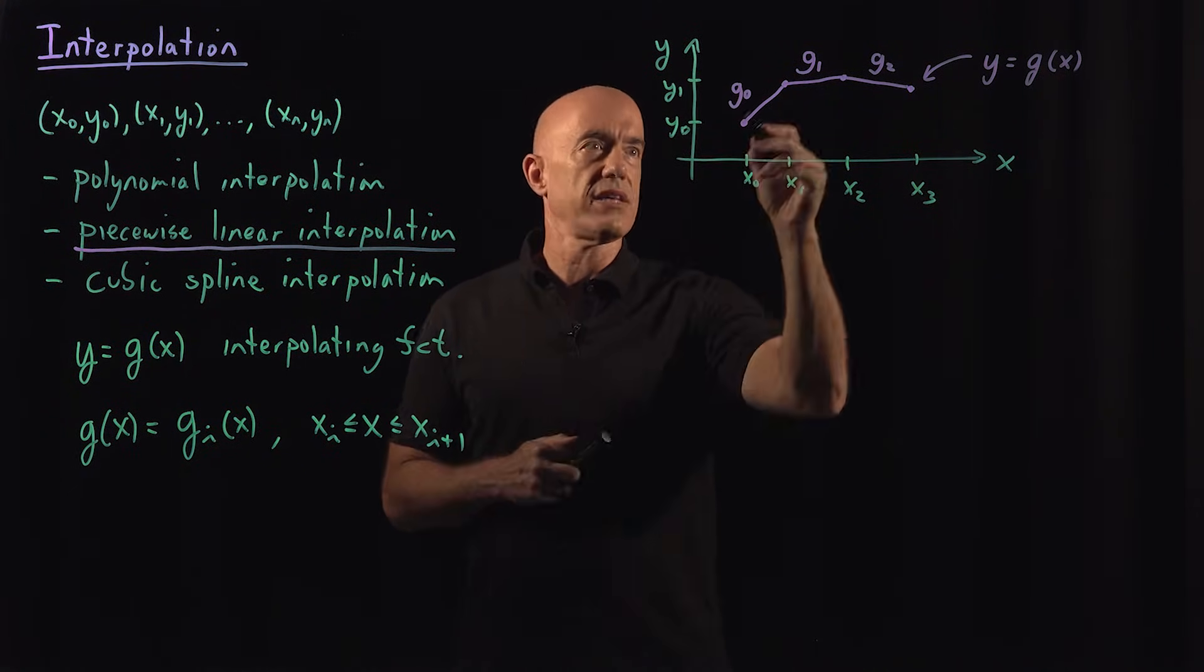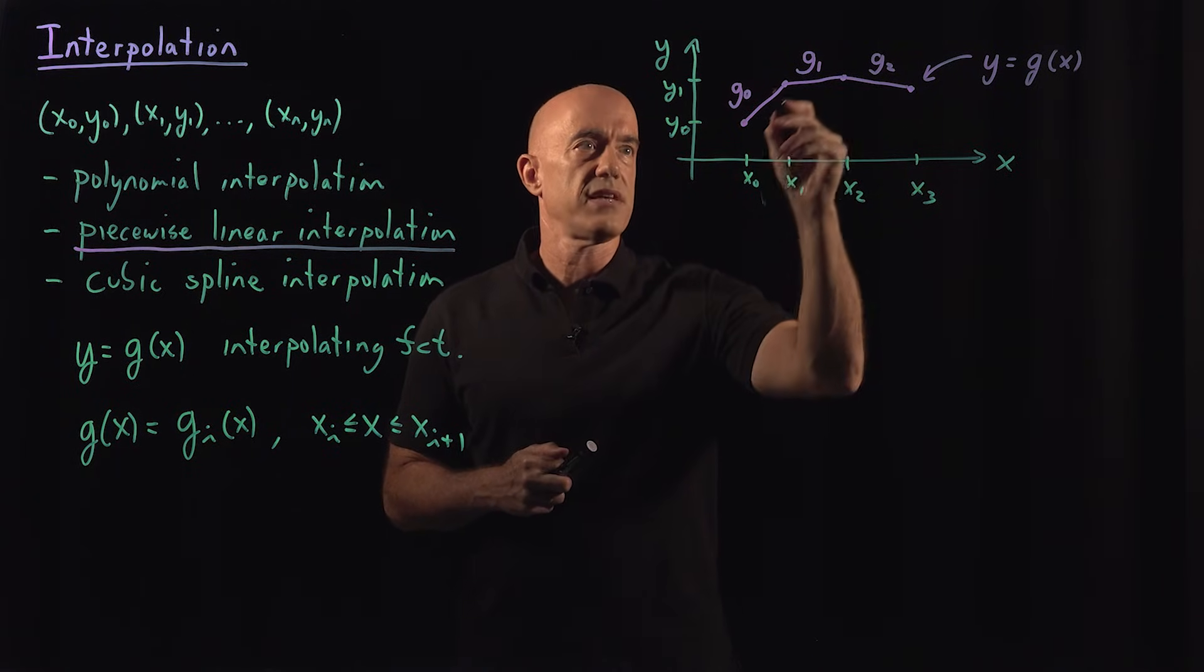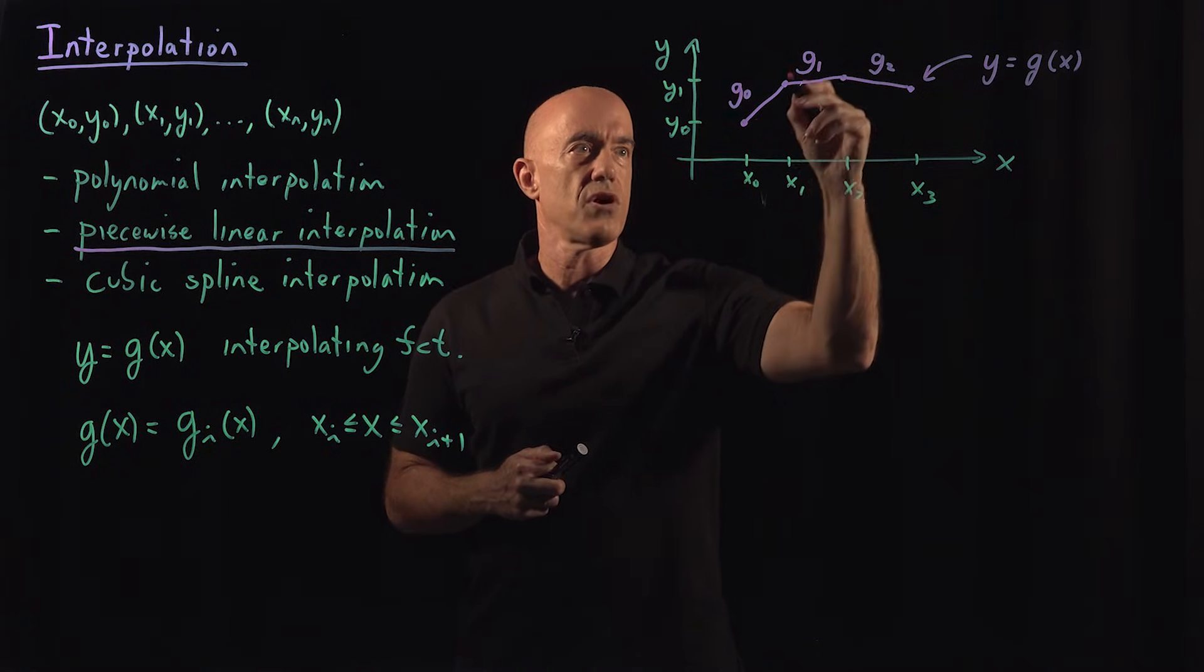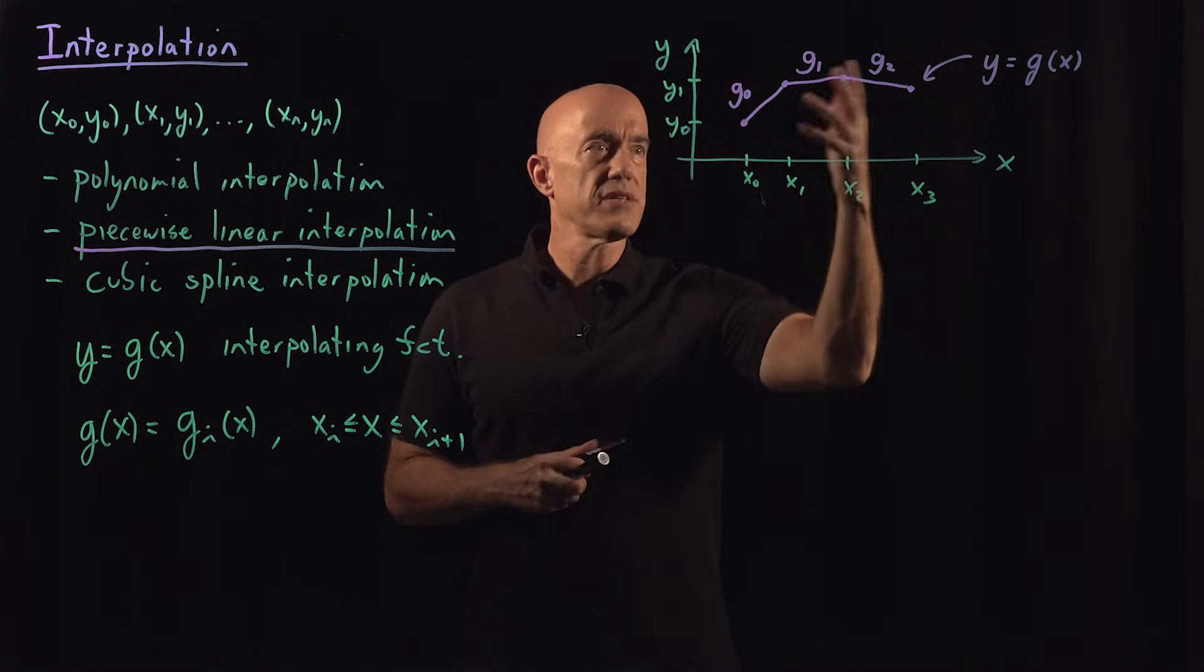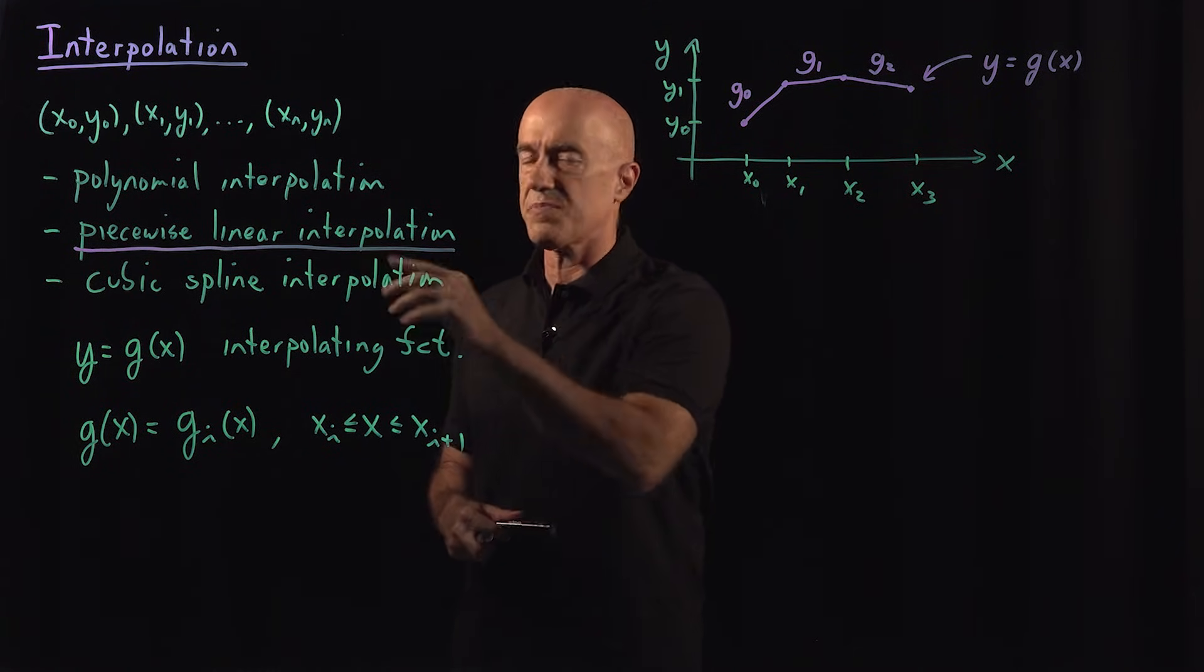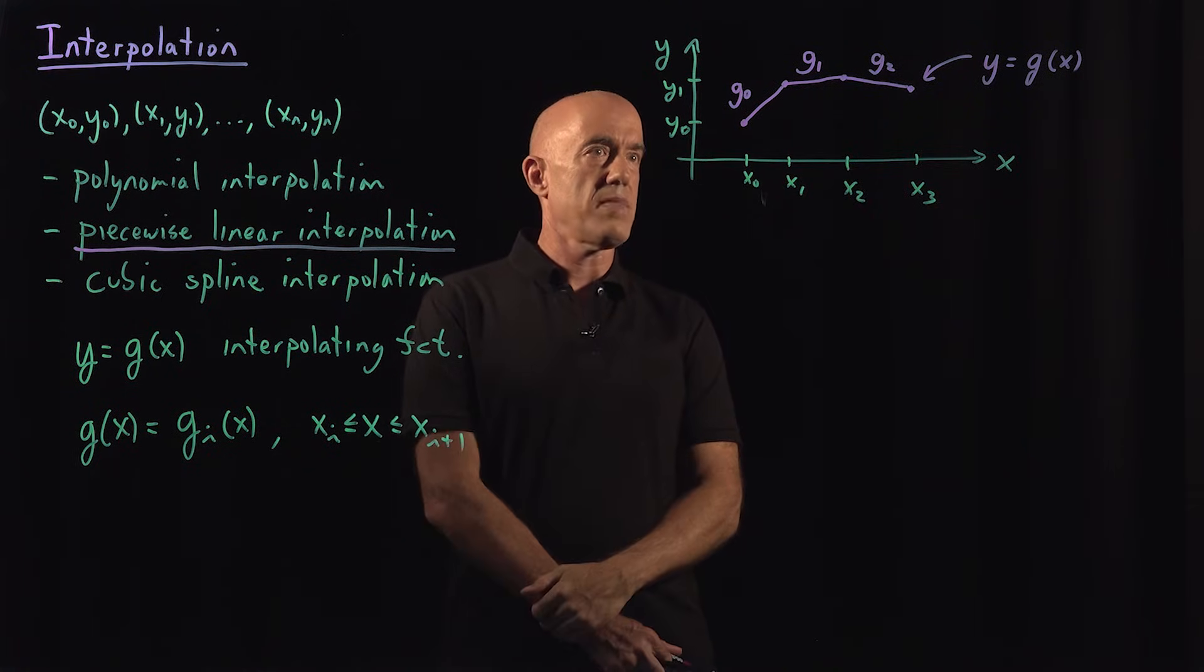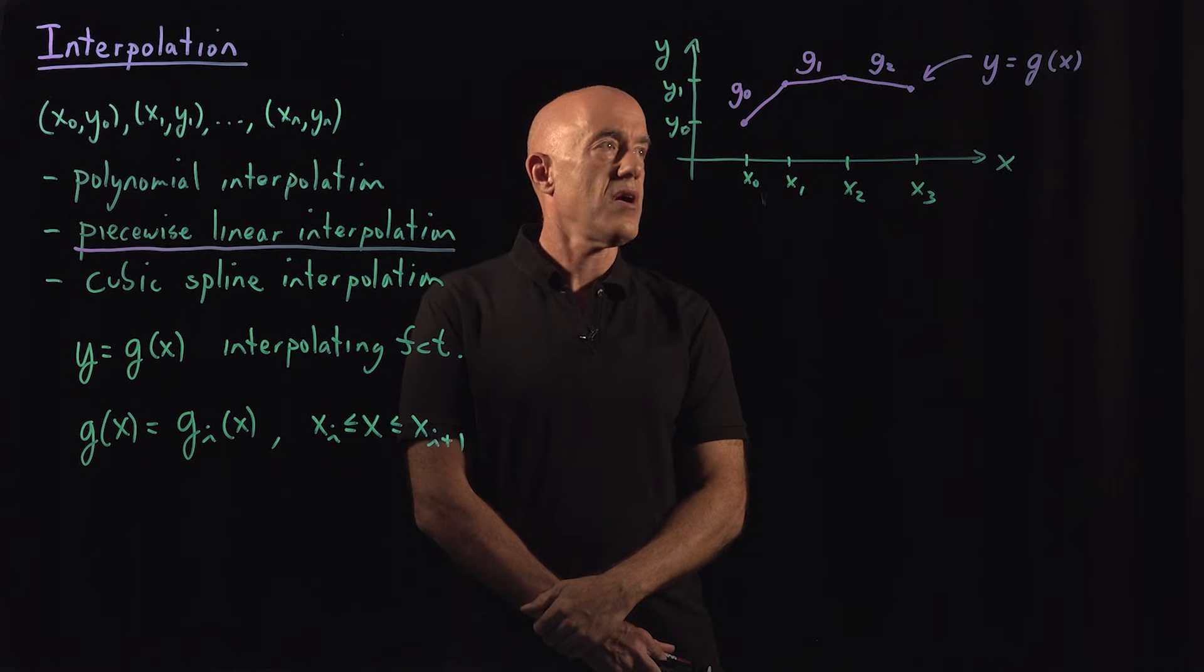For piecewise linear interpolation, the derivative is discontinuous, right? You have a different discontinuity in the slope at each of these points. But it's a continuous function. So for cubic spline interpolation, we will smooth this out, make the derivatives continuous.